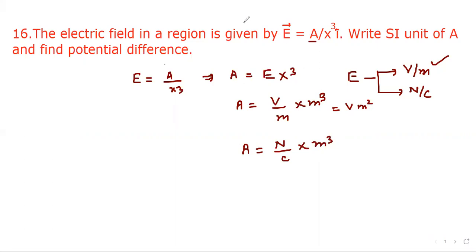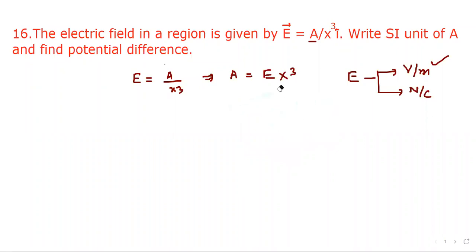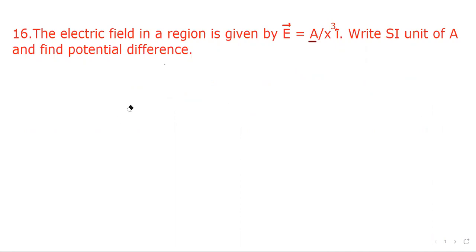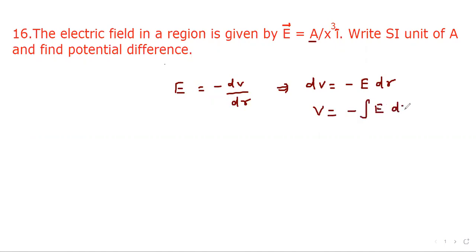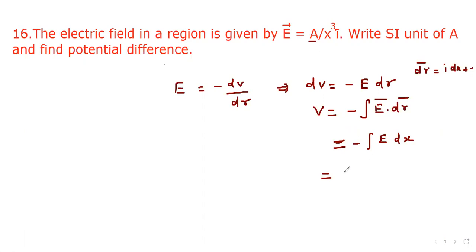Now let's consider the second part: finding the potential. We know that E equals minus dV upon dr, which gives dV equal to minus E dr, or V equal to minus integration of E dr. Here the field is directed along the x-axis, so dr gives i dx plus j dy etc., and the dot product gives only the x component, so we write it as minus E dx.